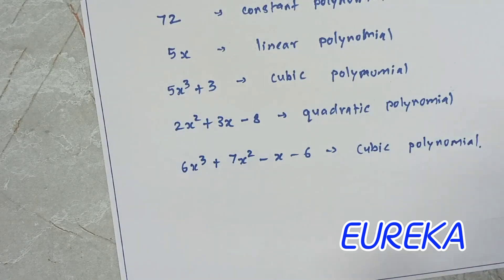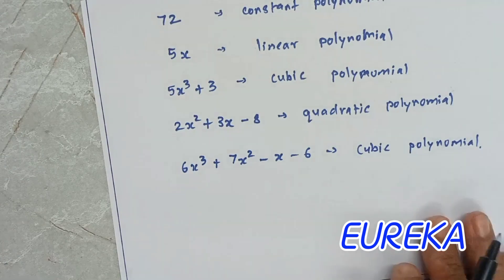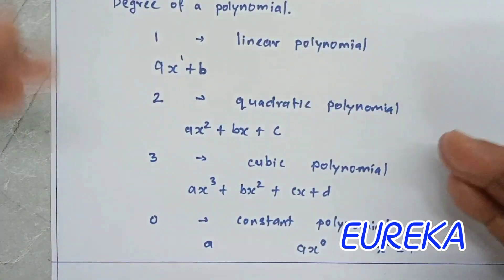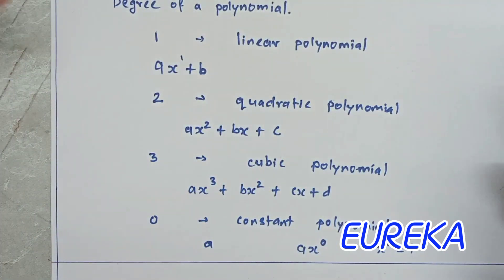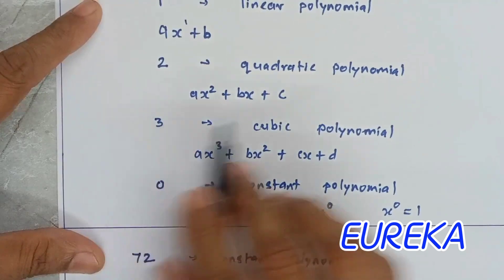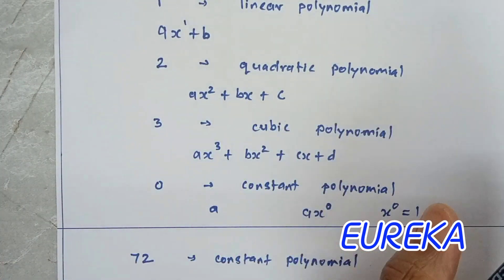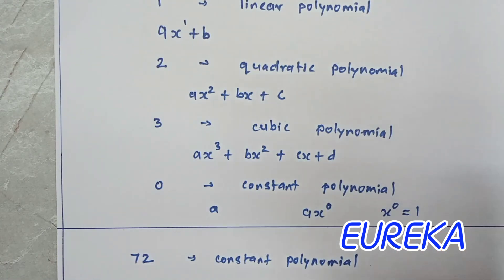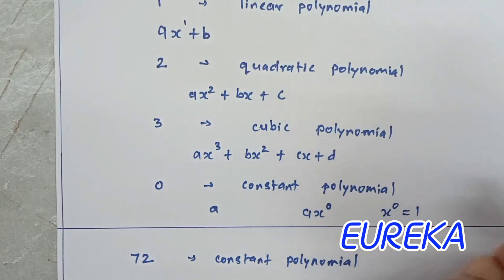I hope these things are very clear to all of you. A polynomial can be constant, linear, quadratic, or cubic. One more that we have not discussed: when the degree is 4, we call it a biquadratic polynomial. Now, one very important concept in this chapter is the zero of a polynomial.